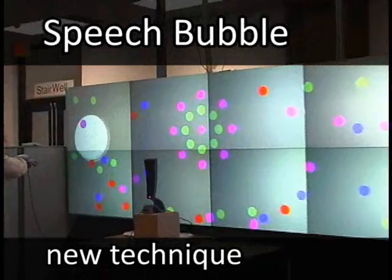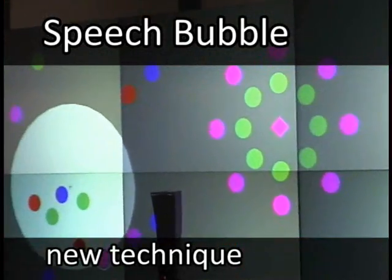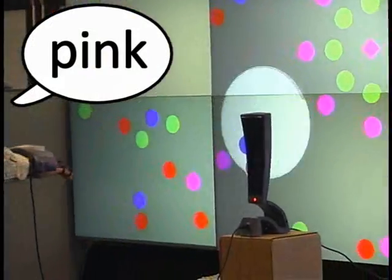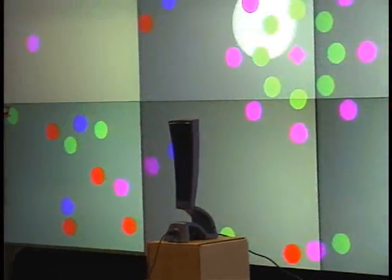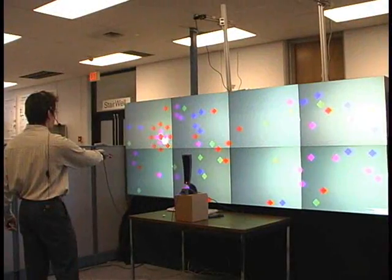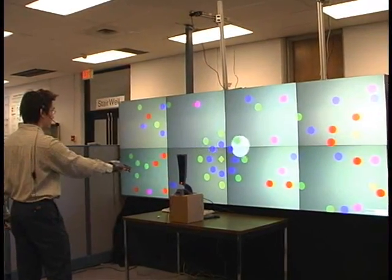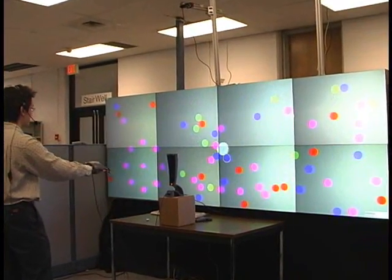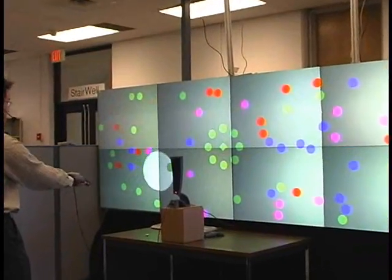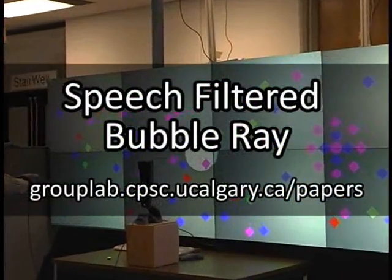Speech bubble allows one to filter the selection space based on a speech command. For example, saying the color of the target filters the bubble ray to select the nearest target of that color. Red, green, pink, green, pink.